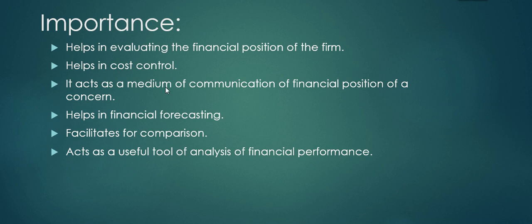Point two: helps in cost control. When a company implements ratios through established ideal standard ratio values for measuring performance, it contributes to cost control. Wherever cost overruns are observed, the company gets to know where costs are over-absorbed and will try to control its costs in order to improve efficiency.